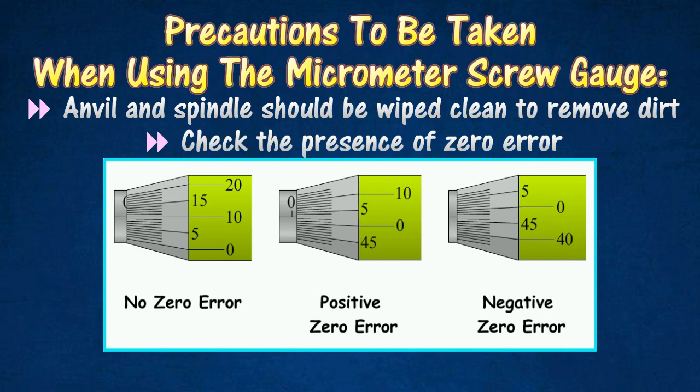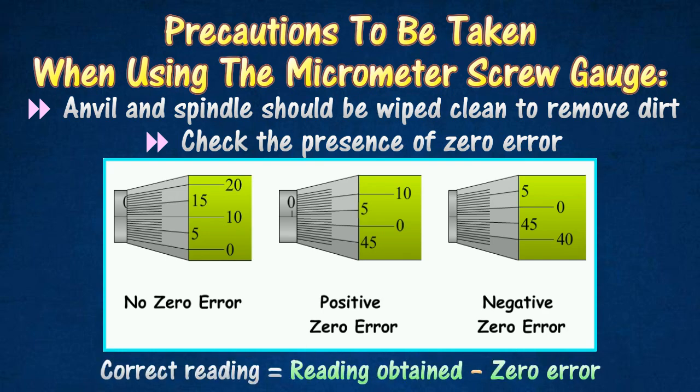If there is zero error, then all readings taken with the vernier calipers have to be compensated accordingly. Thank you for taking time to watch this.